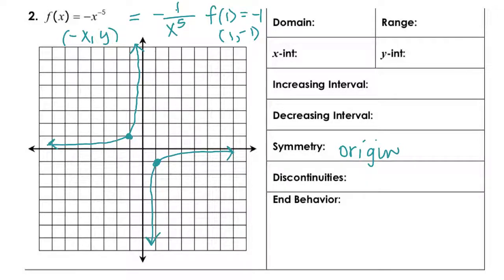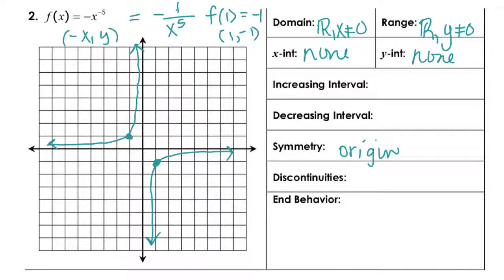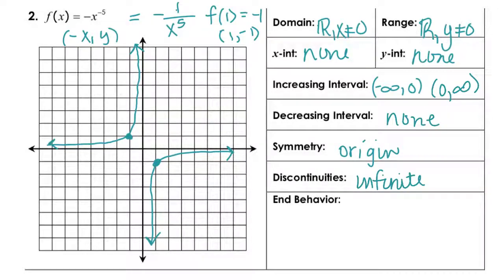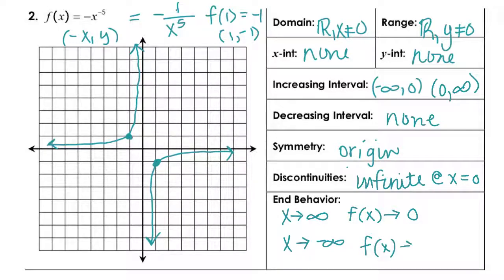For −1/x^5: the domain is all real numbers except x ≠ 0. The range is all real numbers except y ≠ 0. No x- or y-intercepts. Increasing on (−∞, 0) and on (0, ∞); decreasing: none. Symmetric about the origin. Infinite discontinuity at x = 0. End behavior: as x approaches positive infinity, f(x) approaches 0; as x approaches negative infinity, f(x) also approaches 0.